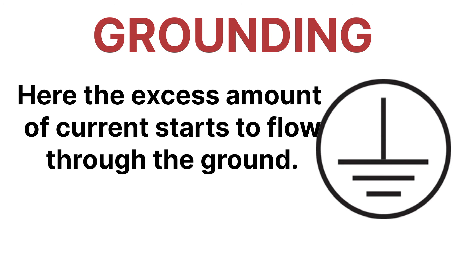Next is electrical grounding. Electrical grounding is the process of directing excess electricity to ground via a wire. Grounding is generally used to flow the excess amount of electricity to the earth. This is the symbol for grounding.